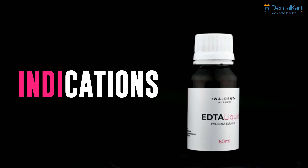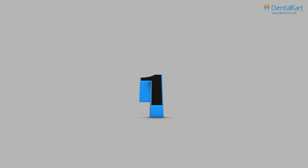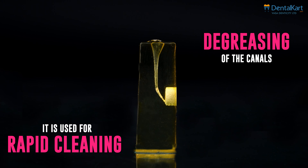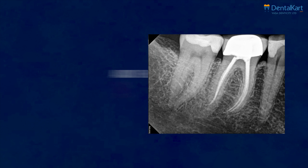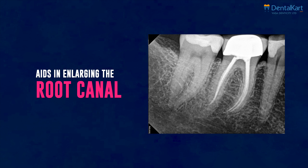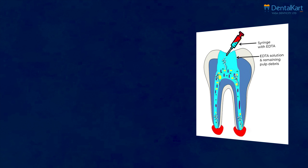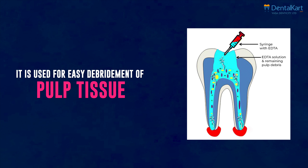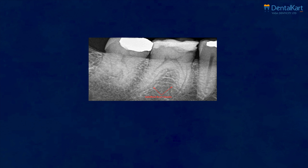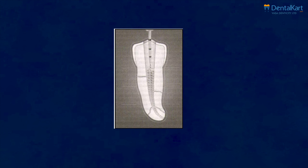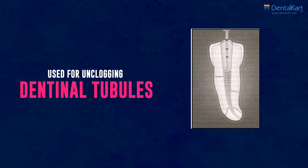Let's now talk about its indications. First, it is used for rapid cleaning and degreasing of the canals. Second, it aids in enlarging the root canal during endodontic procedures. Third, it is used for easy debridement of pulp tissue. Fourth, it is used for opening calcified canals. Fifth, it is used for unclogging dentinal tubules.